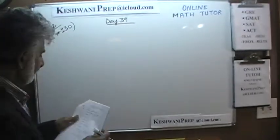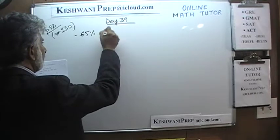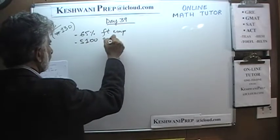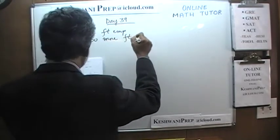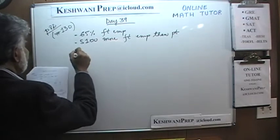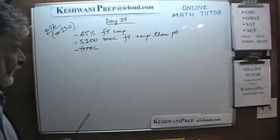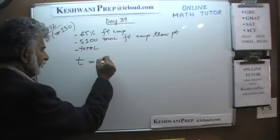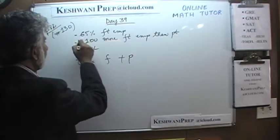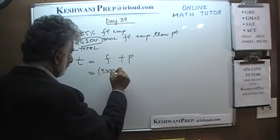Number 130. It says that a firm has 65% full-time employees. We are further told it has 5100 more full-time employees than part-time. The question simply is: what's the total? It's pretty straightforward. The total number of employees equals full-time plus part-time. We are told it has 5100 more full-time than part-time, so the number of full-time is 5100 plus the number of part-time.